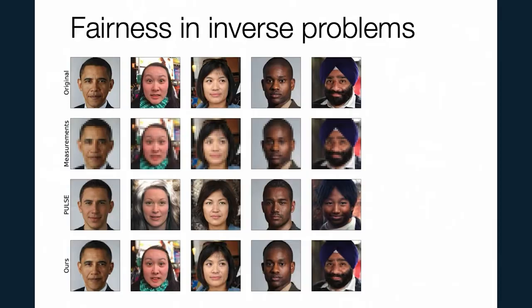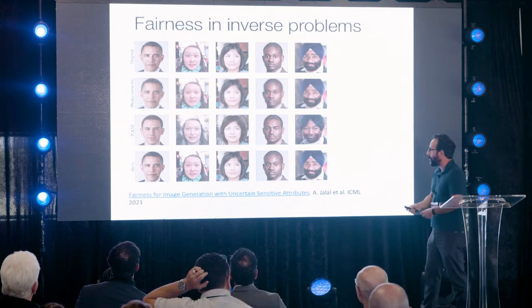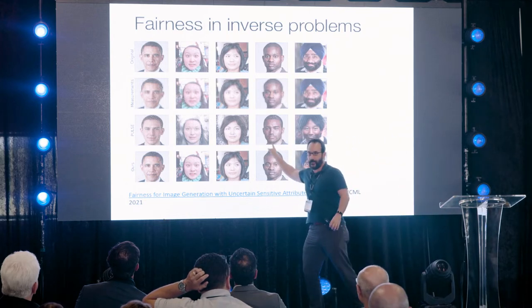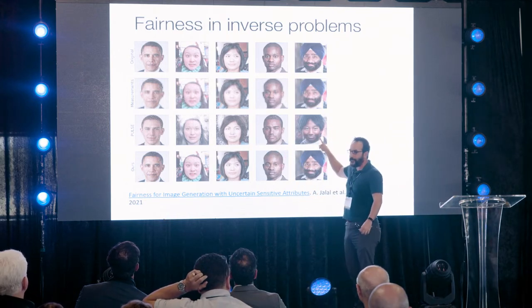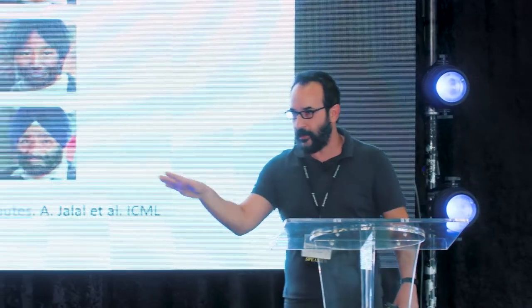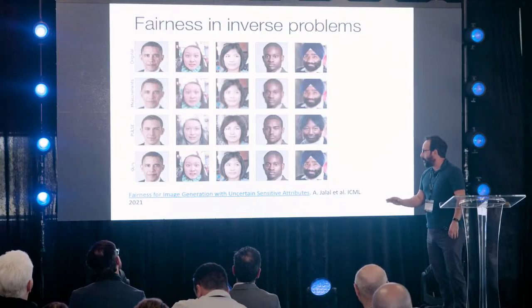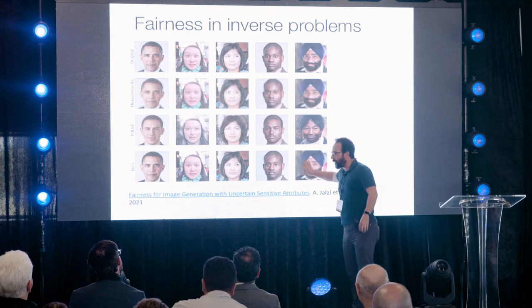Here are our results. On the top row are real people; second row shows measurements; third row shows the previous state of the art, which is terrible and fails in unique ways for each example. With correct algorithmic innovation — sampling from the posterior instead of MAP — we were able to fix that problem to the best of our knowledge, though there is still ongoing research.